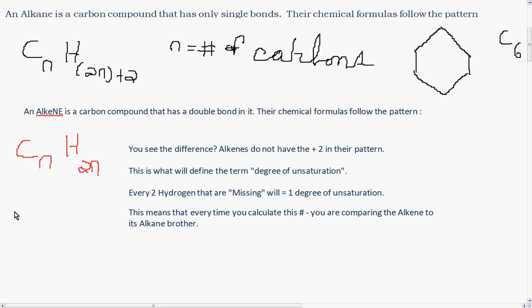An alkene is a carbon compound that has a double bond in it. Their chemical formulas follow the pattern CnH2n. Do you see the difference? Alkenes do not have plus 2 in their pattern.